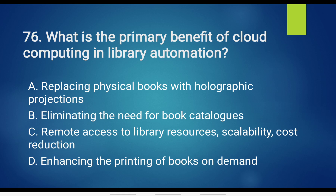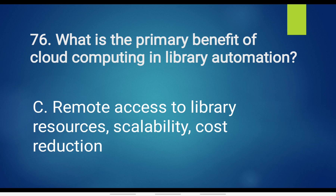Question No. 76. What is the primary benefit of cloud computing in library automation? Option A. Replacing physical books with holographic projections. Option B. Eliminating the need for book catalogs. Option C. Remote access to library resources, scalability, cost reduction. Option D. Enhancing the printing of books on demand. The answer is Option C. Remote access to library resources, scalability, cost reduction.